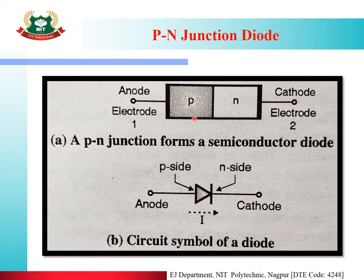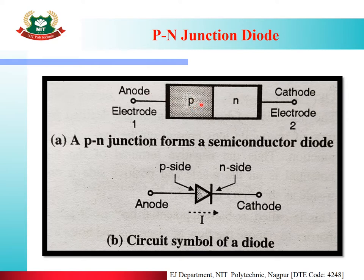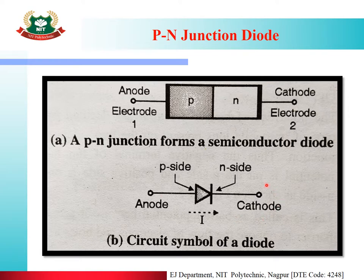So the PN Junction Diode — this is a PN Junction Semiconductor Diode, and this is the circuit symbol of the diode. This is the Anode Terminal, this is the Cathode Terminal. The direction of current flow is from Anode to Cathode. This part is also known as P-Side and this part is known as N-Side, also called P-Region and N-Region respectively.